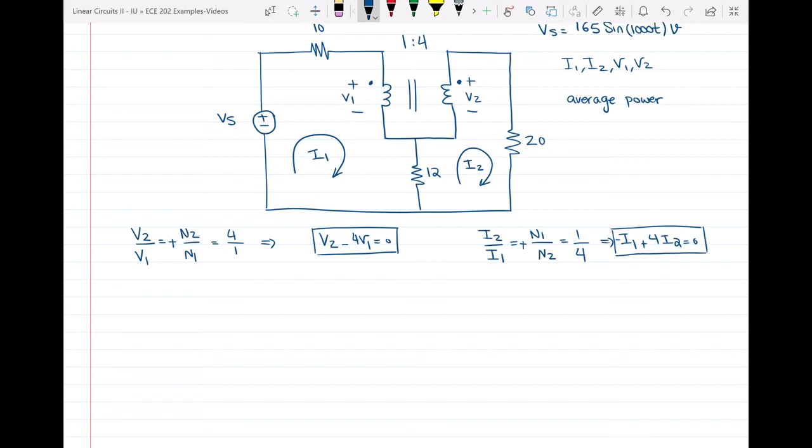Then I need two more equations. I can write KVL in these two loops that I have. Loop number one, which I have I1 in it. This is my loop number one and loop number two. I wrote this loop one and loop two here so you know when I'm talking about loop one where I'm talking about.